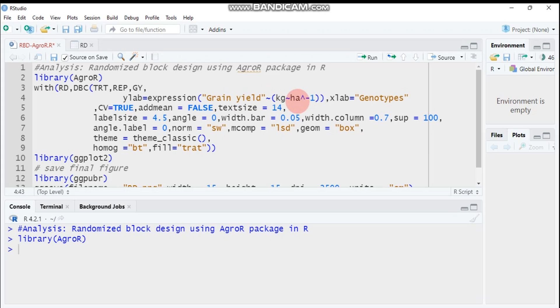CV equals true means the bar plot will display the p-value along with the coefficient of variation in percentage.